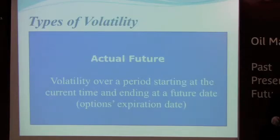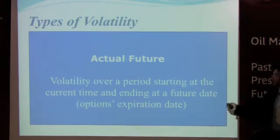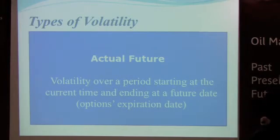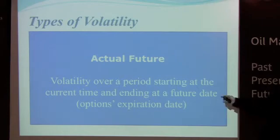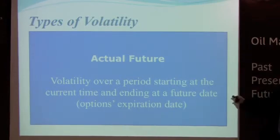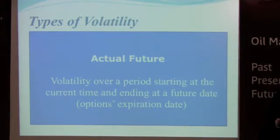The next type is expected future volatility, which is mainly the projection you see over the internet — volatility over a period starting at the current time and ending at a future date, particularly the option expiration date. You may have come across the volatility smile, which is a chart that explains the price action for an option from the beginning of its life until expiration, showing how volatility fluctuates throughout the entire life of that option. This is very important for options traders, and increasingly for futures traders as the futures market has become very volatile, especially in the last two or three years.